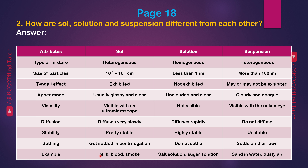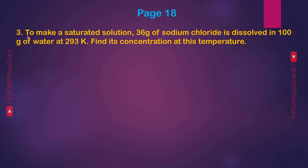Examples — Sol: milk, blood, smoke. Solution: salt solution, sugar solution. Suspension: sand in water, dusty air. Question 3: To make a saturated solution, 36 grams of sodium chloride is dissolved in 100 grams of water at 293 Kelvin. Find its concentration at this temperature.